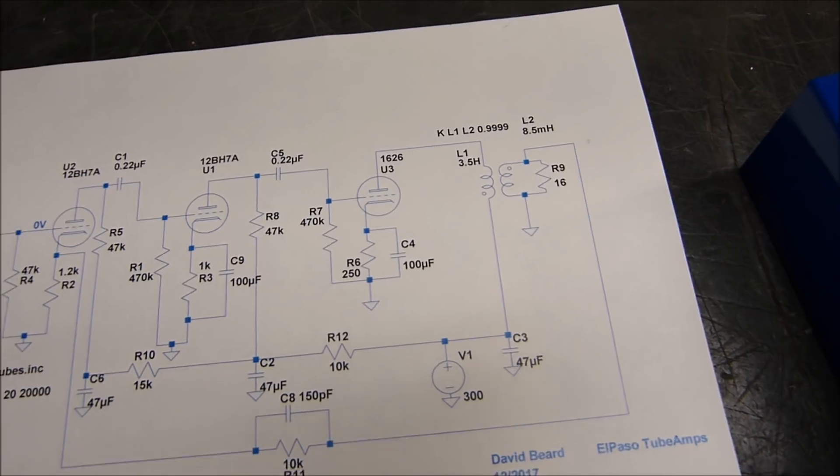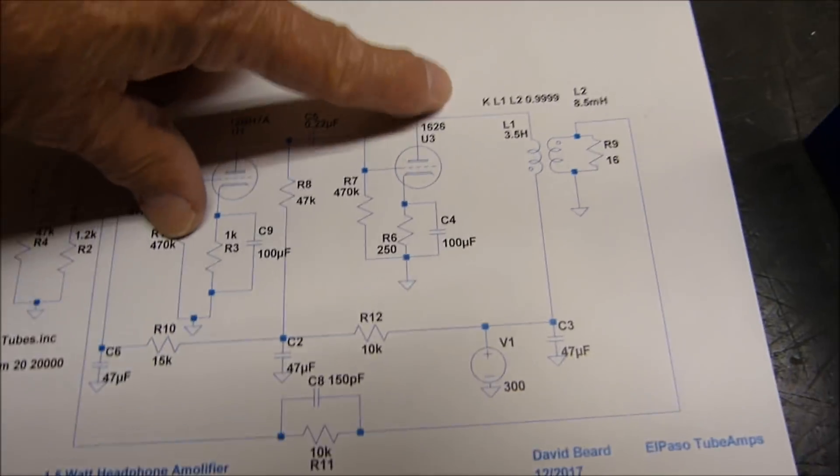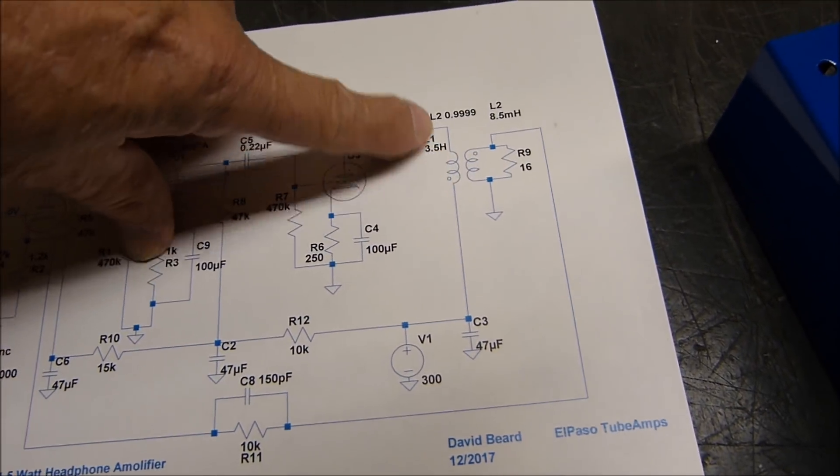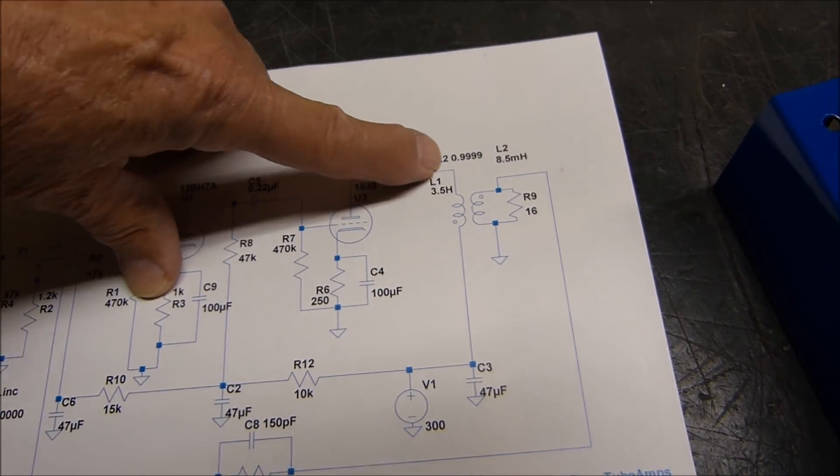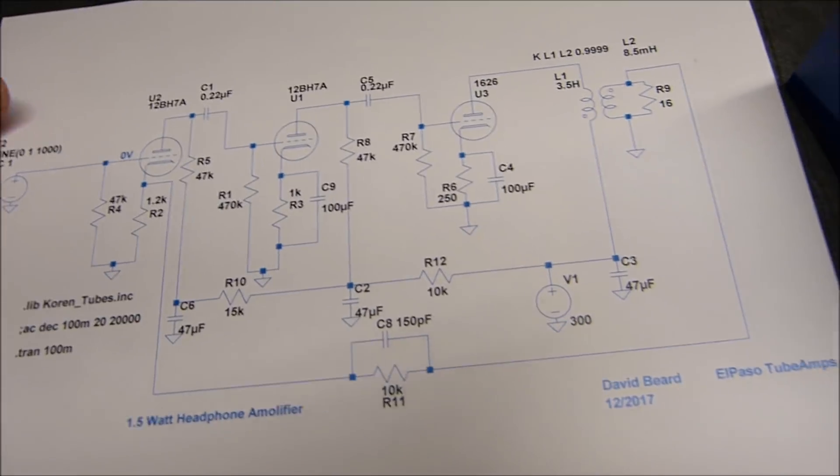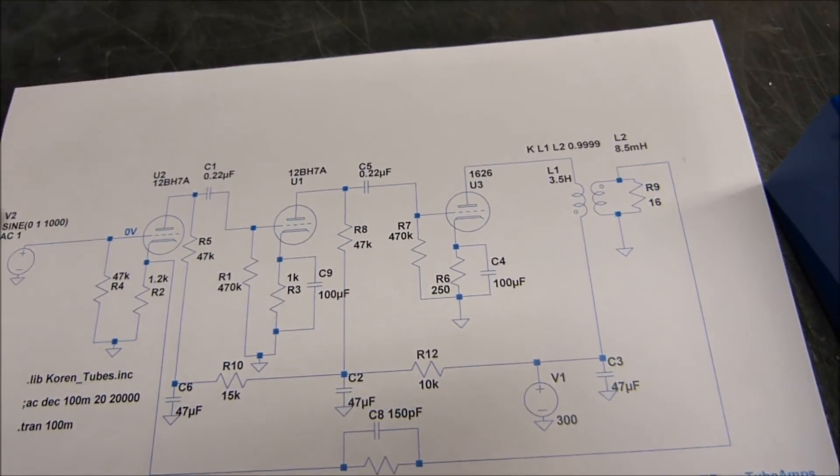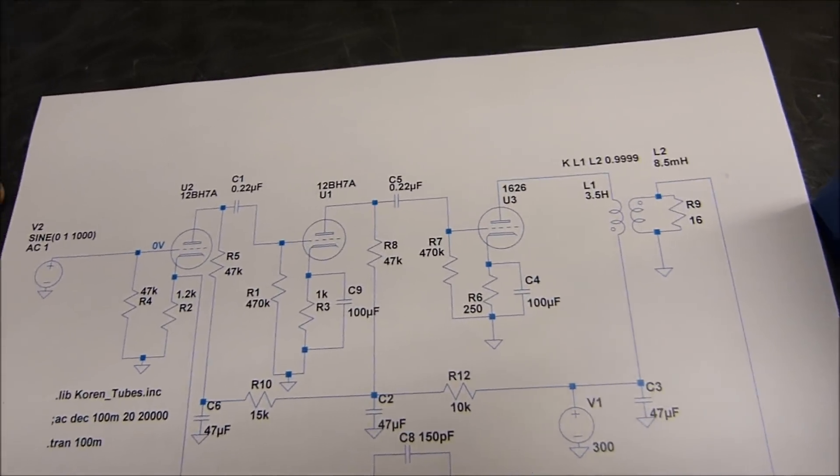Over here my problem was I was floundering for a couple of days because right here, this coupling factor between L1 and L2, between the primary and secondary of the transformer, I had 0.0999 instead of 0.999. So I was off by a factor of 10 and it didn't model very well at all. All I could get out here was milliwatts. I kept thinking, what is wrong with this picture? But anyway, finally got that figured out.